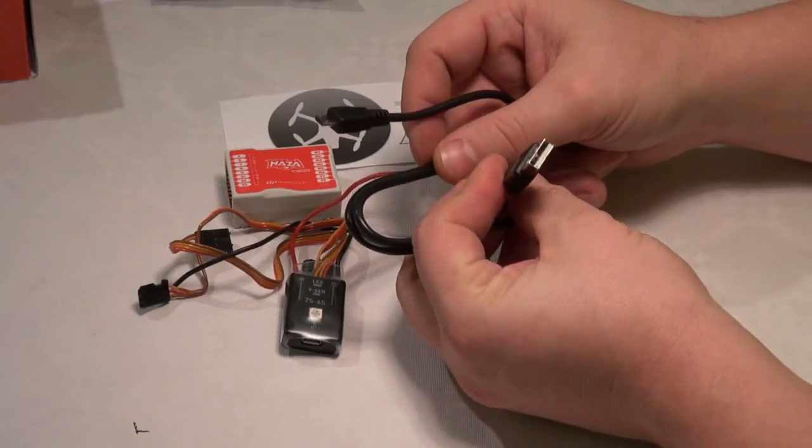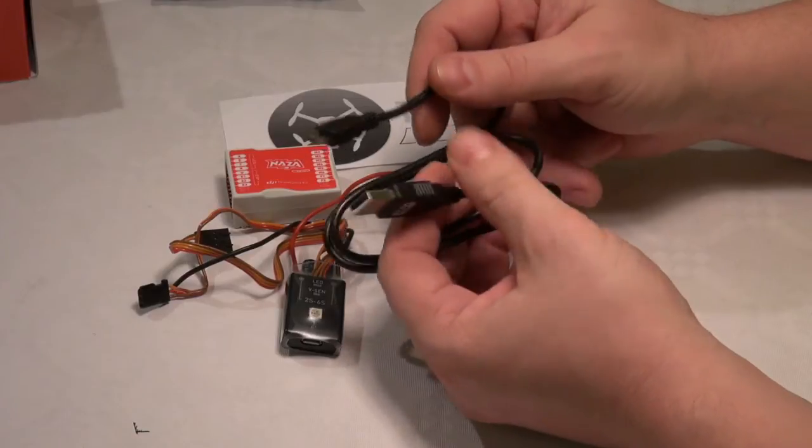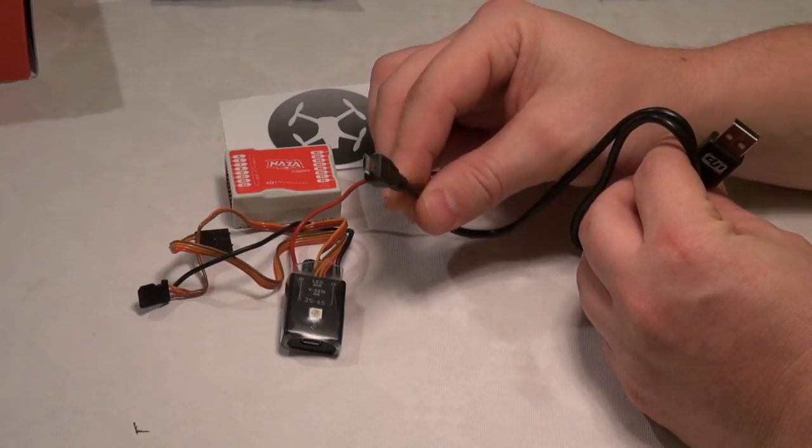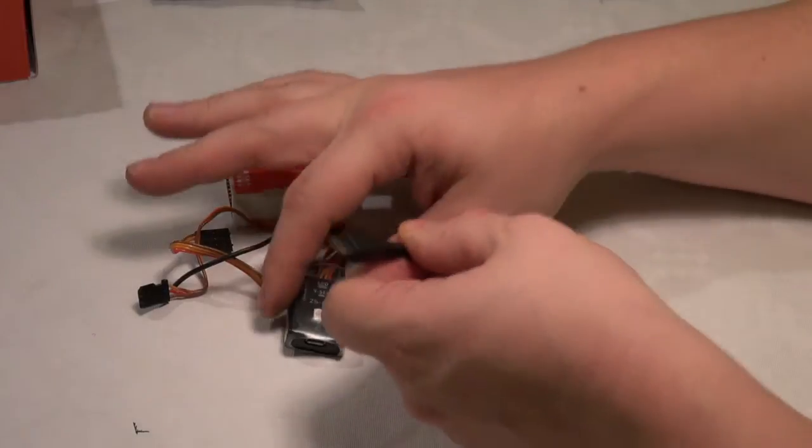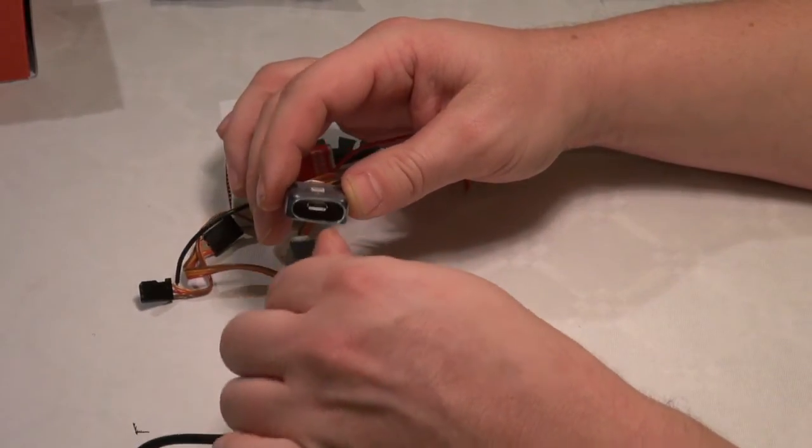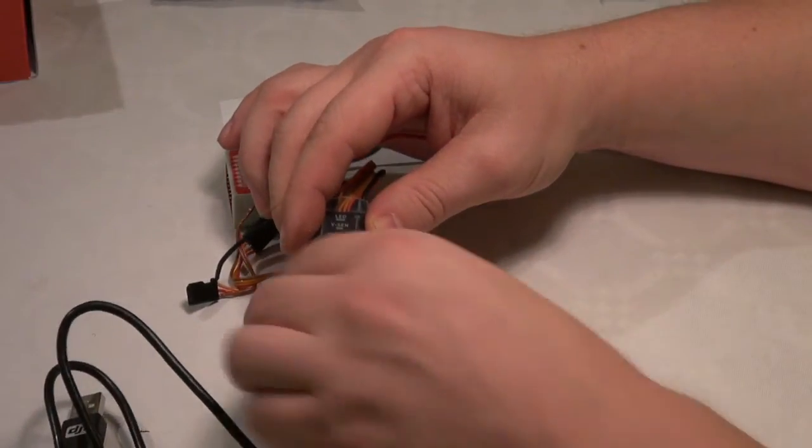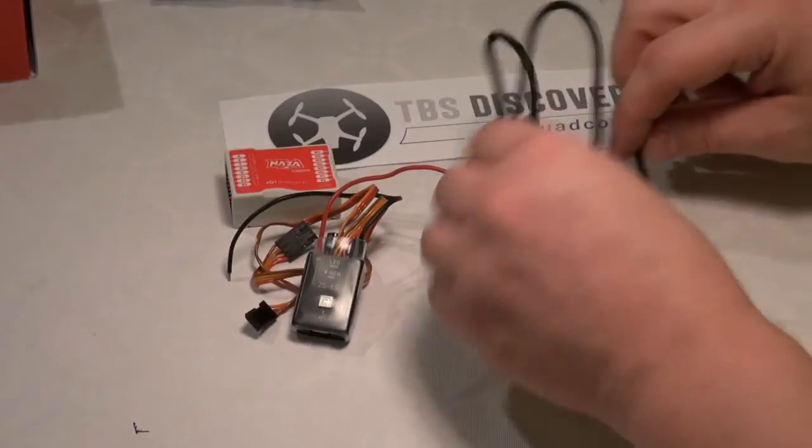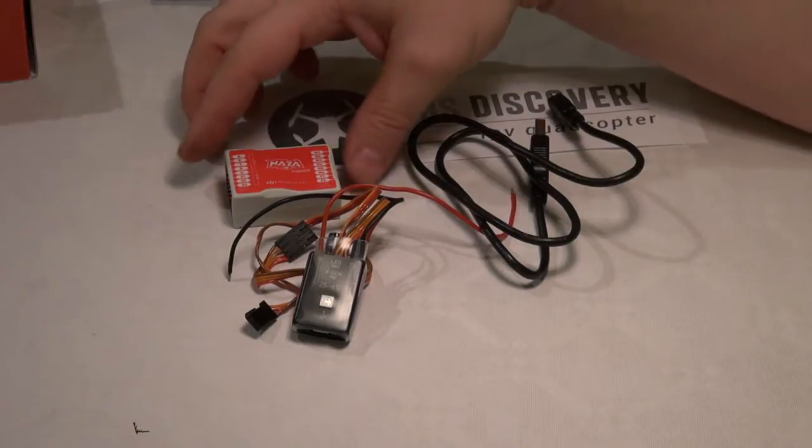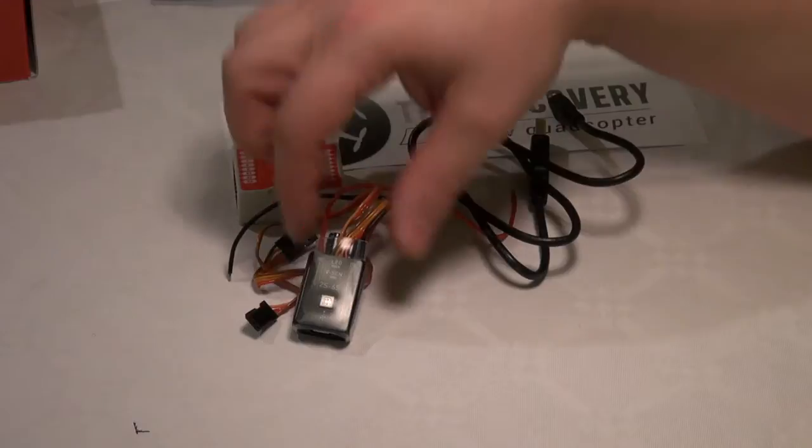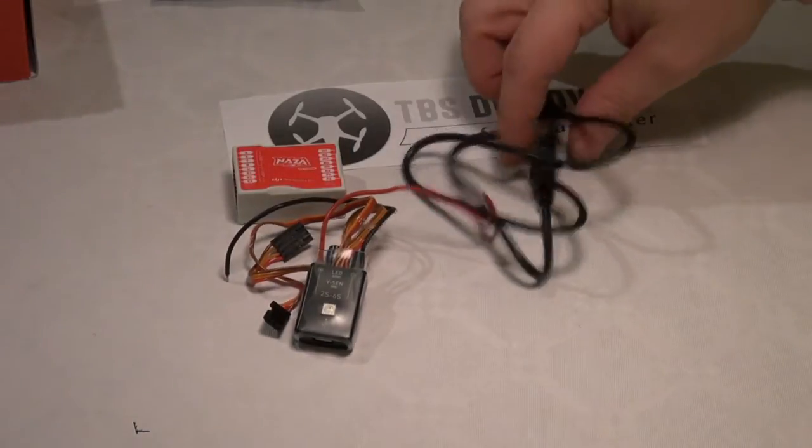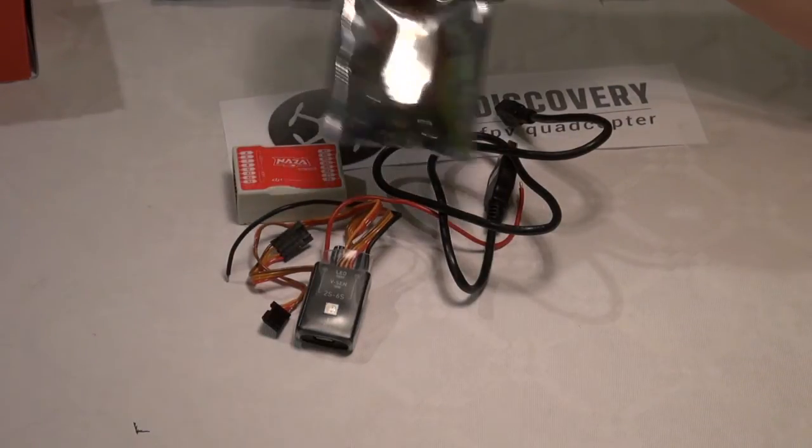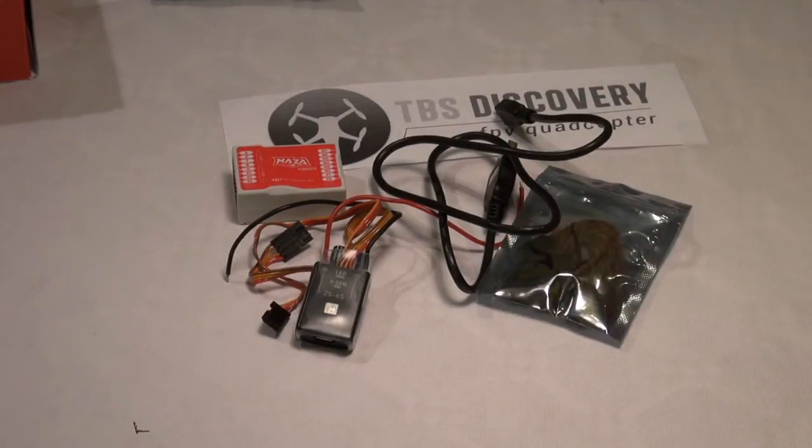One side is a standard USB port for computers, and the other end is, I think this is called the micro USB, which will fit in the bottom of the controller like this, and pull it out. So the NAZA controller package consists of the controller, the vSense unit, the USB cable, and the bag of servo wires. That's what you get in the NAZA controller package.